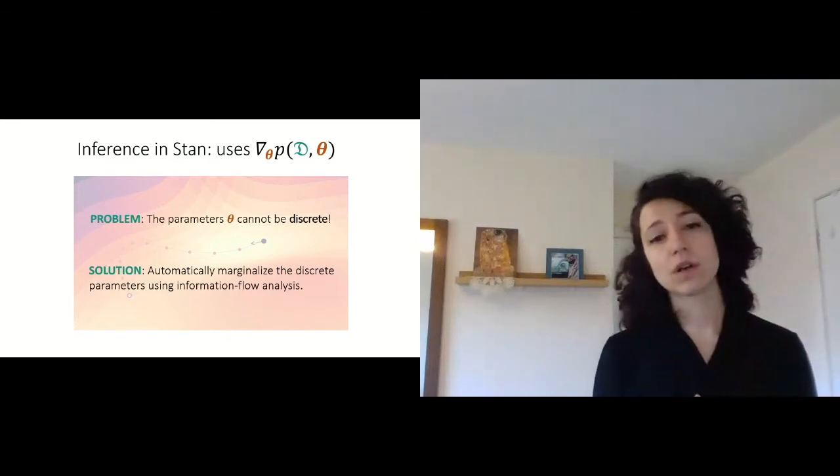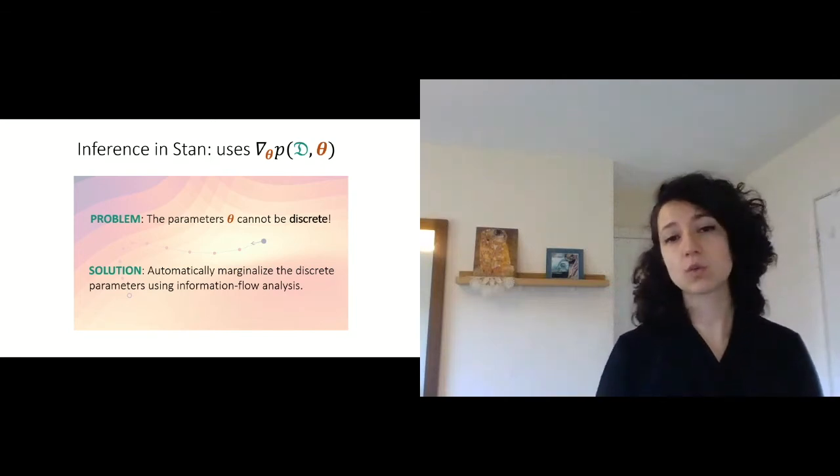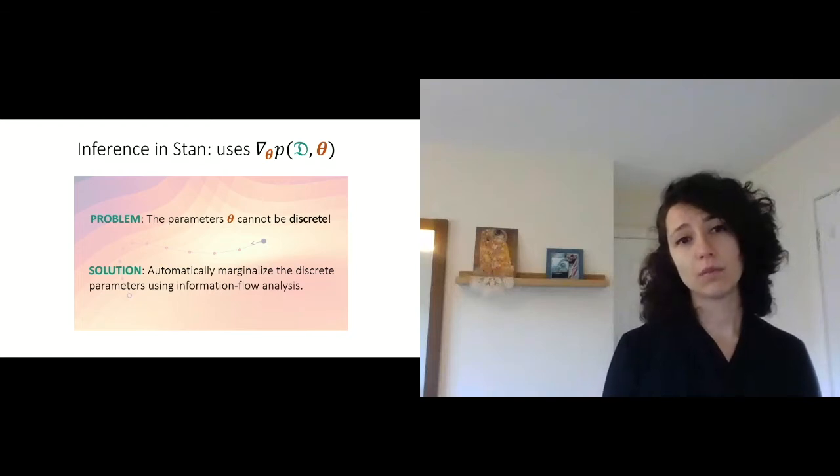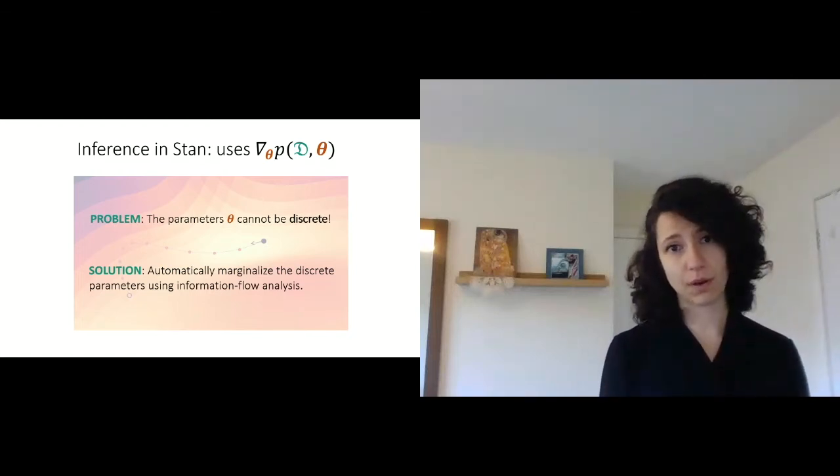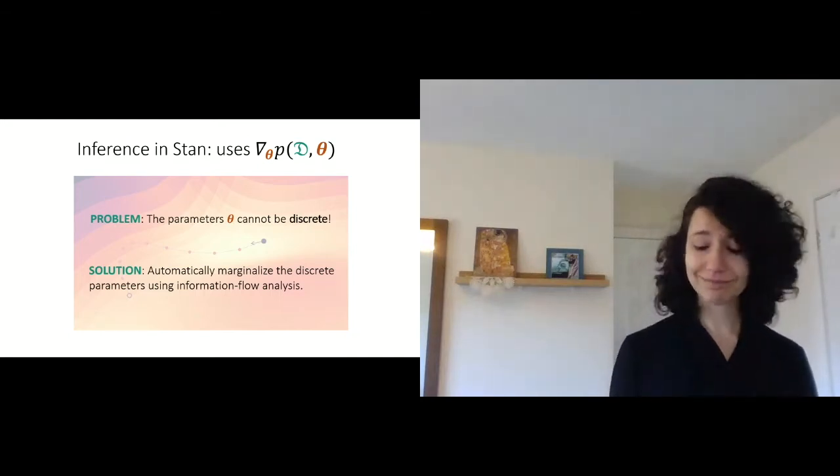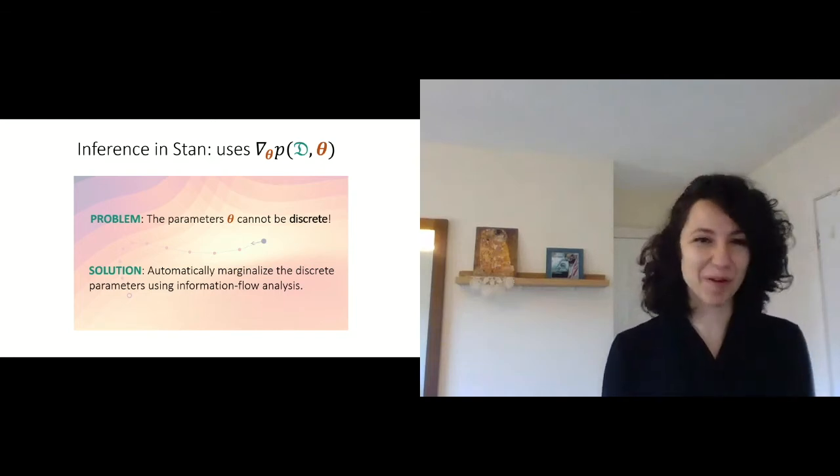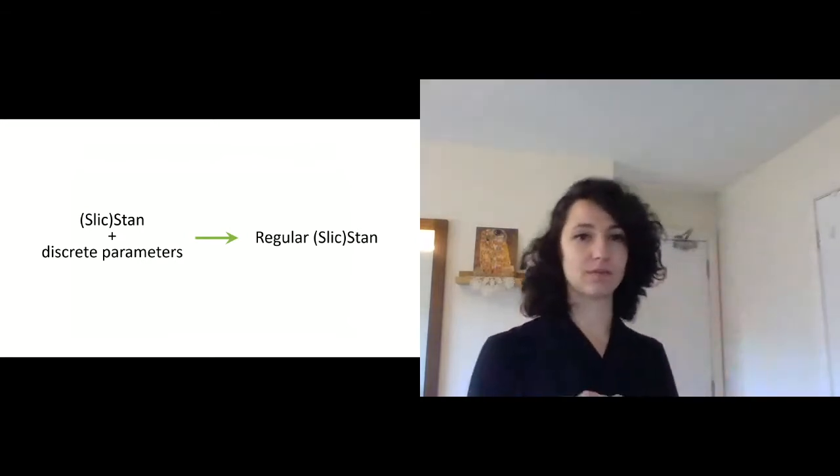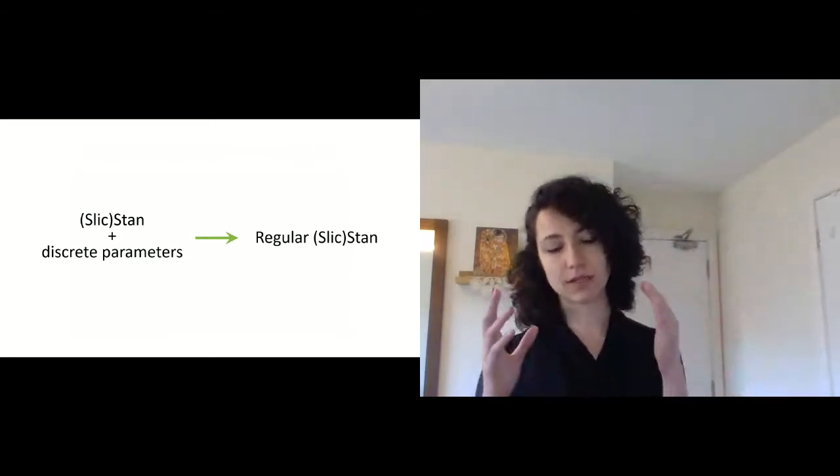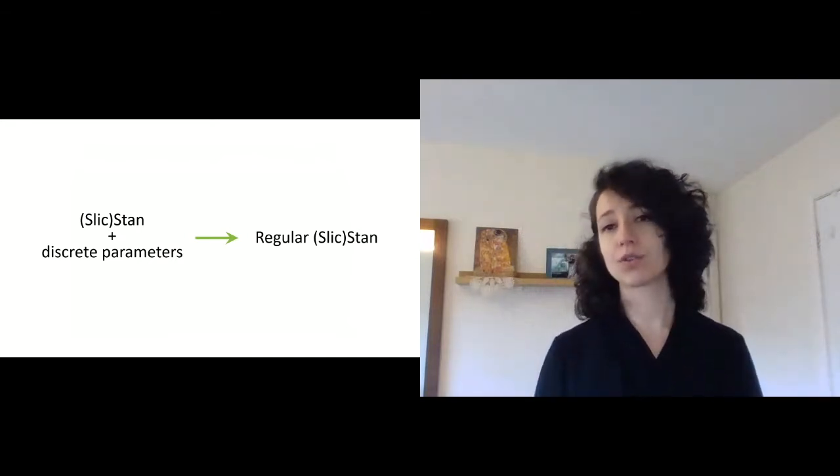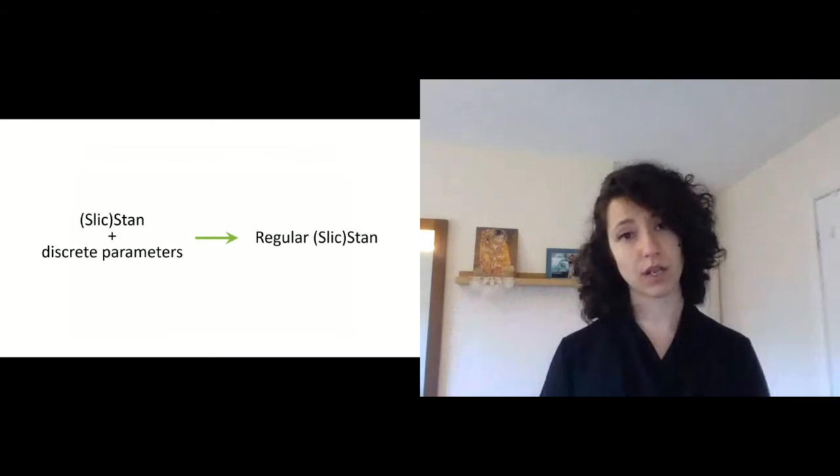But, there exists a workaround, and this workaround is well known. It's documented a lot in the Stan user guide, where users can use discrete parameters in Stan, kind of implicitly, by marginalizing them out of your program. And you can probably see where I'm going with this, which is that for this work, we decided we want to take a program that is a Stan program, but with discrete parameters, and automatically apply this workaround in order to get regular Stan that we can then run HMC on.